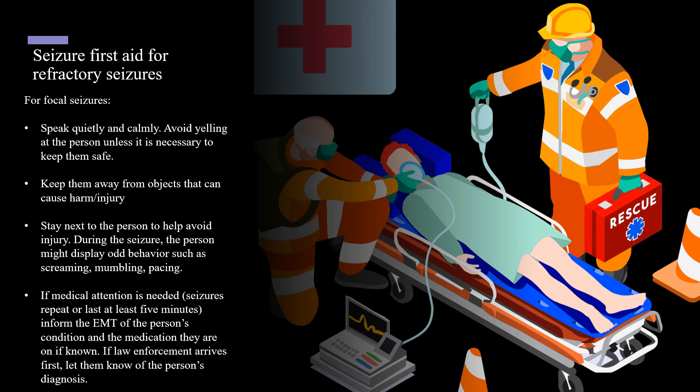If someone with refractory epilepsy has a focal seizure, speak quietly and calmly. Avoid yelling at the person unless it is necessary to keep them safe. Keep them away from objects that can cause harm or injury, and stay next to the person to help avoid injury. During the seizure, the person might display odd behavior such as screaming, mumbling, or pacing. If the seizure lasts for more than five minutes, call for medical attention. Inform the EMT of the person's condition and the medication they are on if known. If law enforcement arrives first, let them know of the person's diagnosis.